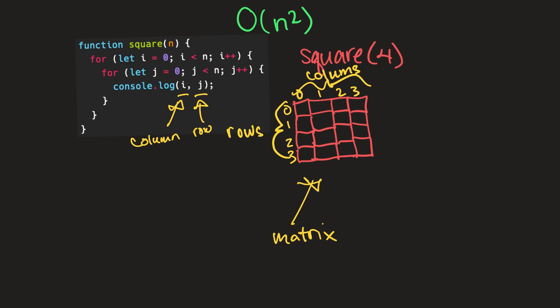So coordinates zero and zero were the coordinates for this square, zero and one for the next square, zero and two for the next, and so on and so forth.